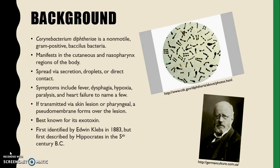If C. diphtheriae is transmitted via skin lesion or pharyngeally, a suede membrane forms over the lesion. This membrane may contain host immune cells, dead skin cells, and bacteria. This pathogen was first identified by Edwin Klebs in 1883, but was first described by Hippocrates in the 5th century BC.